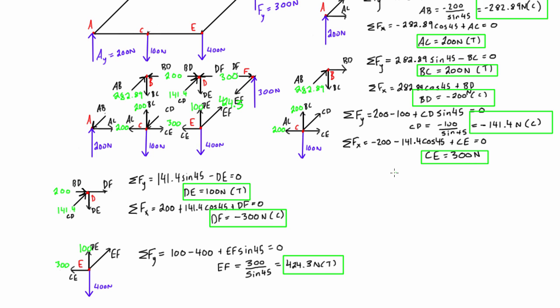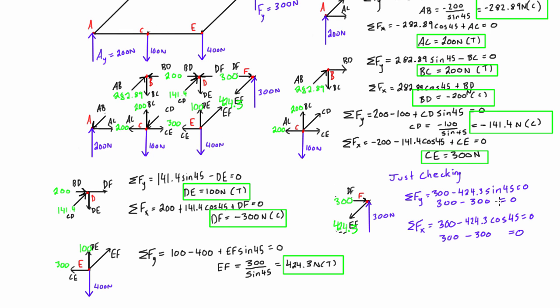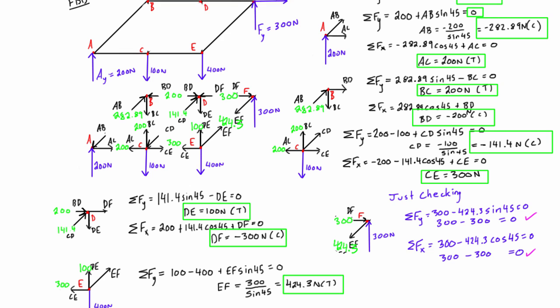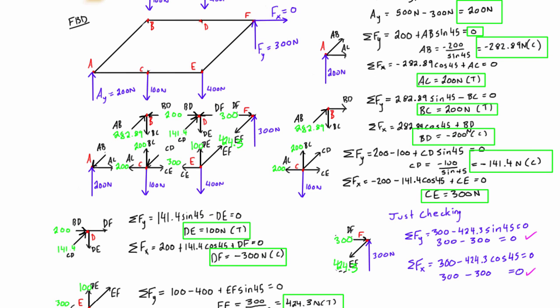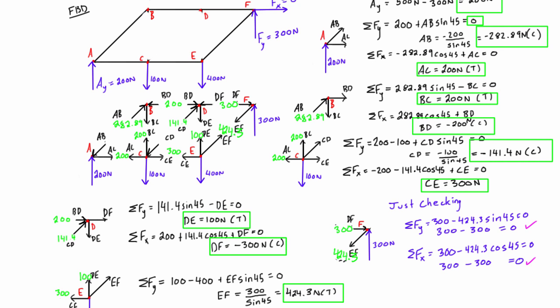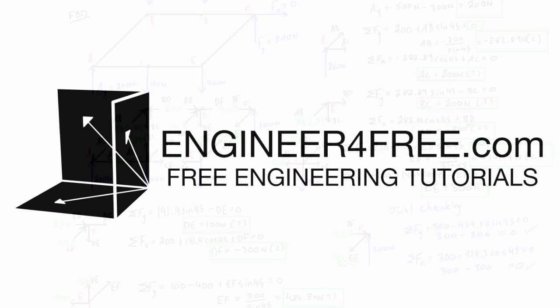One thing we could do that's really helpful, and I recommend doing this if you're doing this on a test, is check to make sure that you're right. The way we do that is we want to isolate joint F here with a free body diagram, and we're just going to make sure with the internal forces we've calculated that this all still nets out to zero. This last free body diagram, the sum of forces in the y direction checks out to be equal to zero, sum of forces in the x direction checks out to be zero, so we know we've done these correctly and we've done the whole rest of the problem correctly. The solution to the problem is everything we had here with a green square around it, which is all of the internal force magnitudes and senses, whether they're in tension or compression.